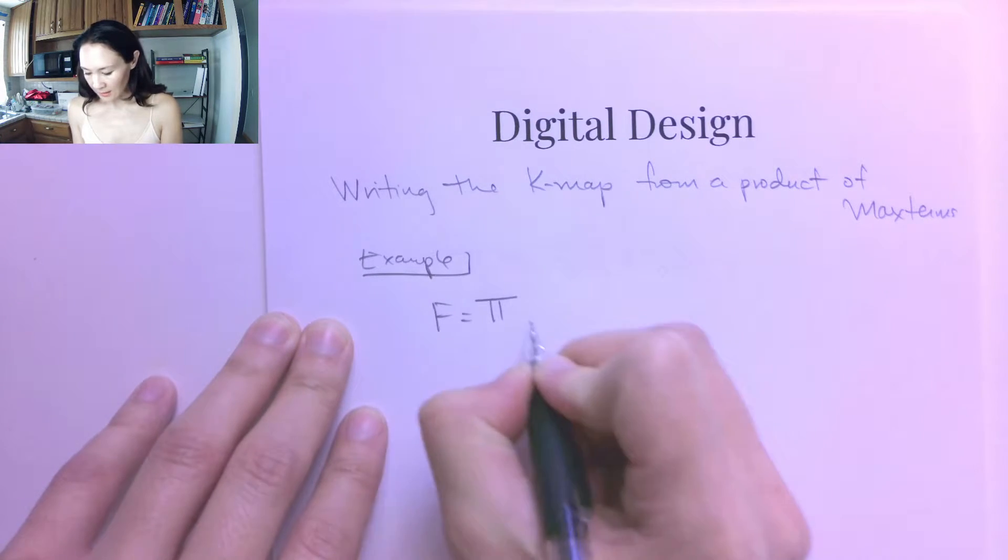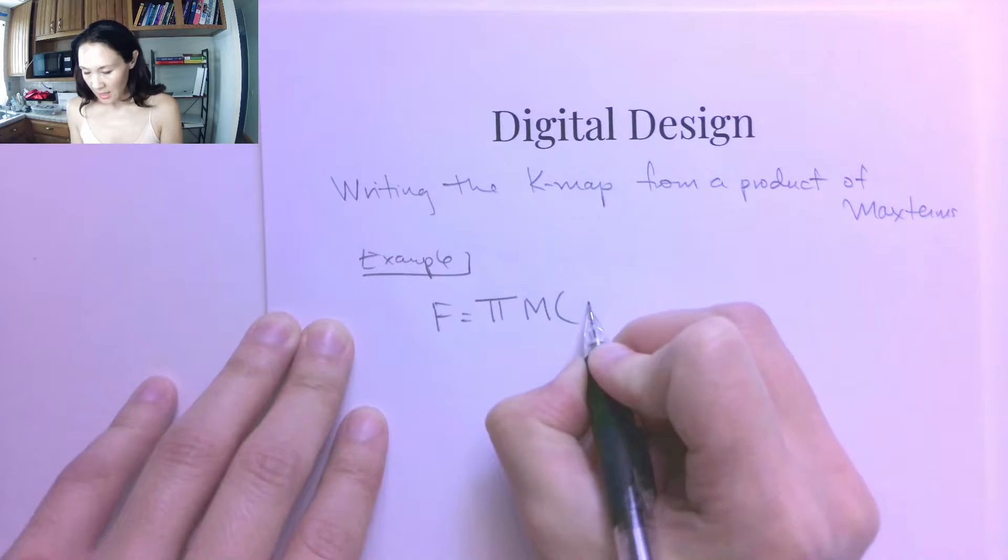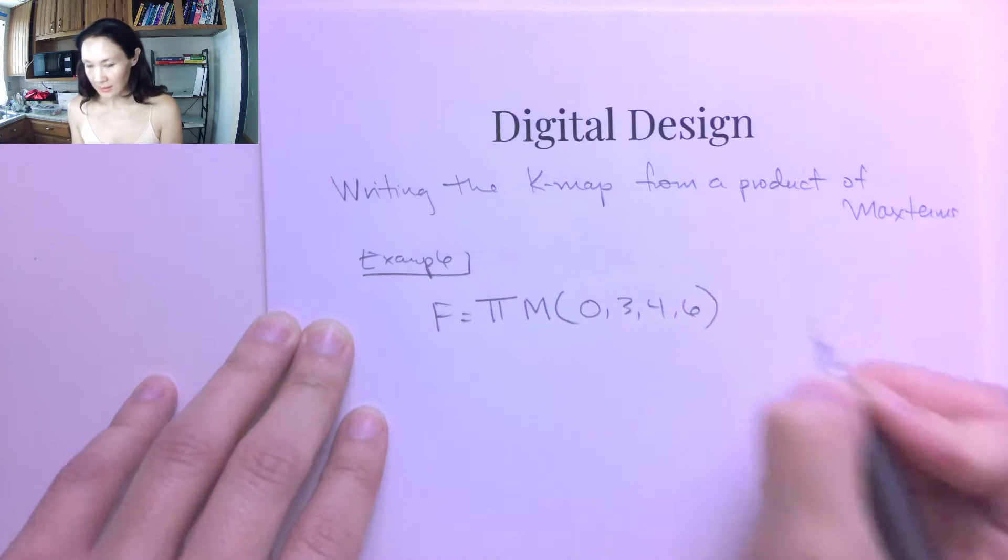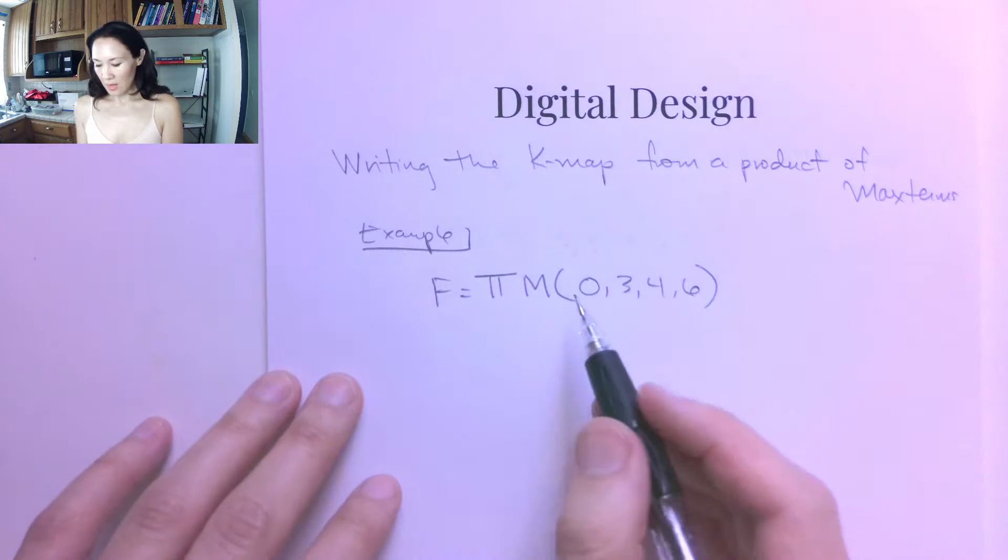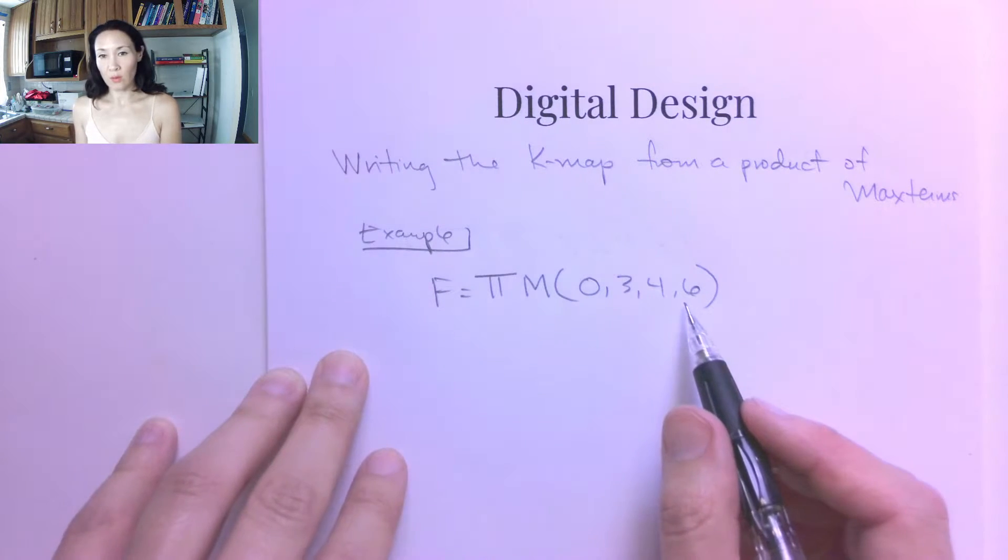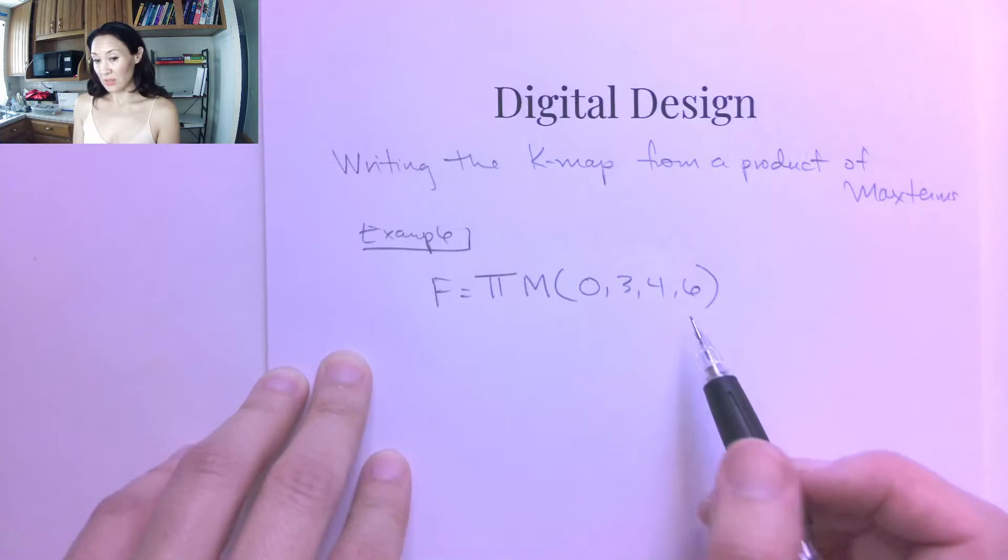So there's this capital pi that means multiply all these max-terms. And if it's the list, say 0, 3, 4, 6, for example. These locations are going to basically tell you, instead of where the ones are, where f equals one, these locations tell you where f equals zero.